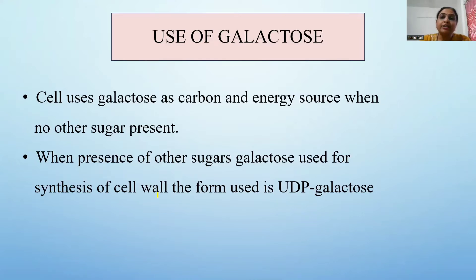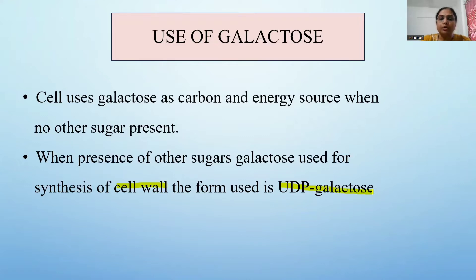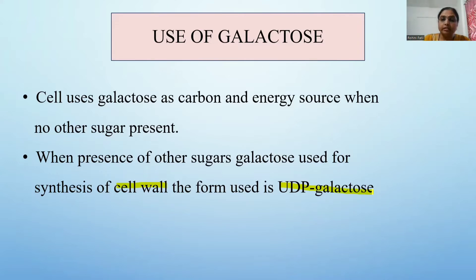The second use of galactose by bacterial cells is for cell wall synthesis. The form used for cell wall synthesis is UDP-galactose. So galactose is required both when no other sugar is present — for energy — and also when other sugars are present, for cell wall synthesis.